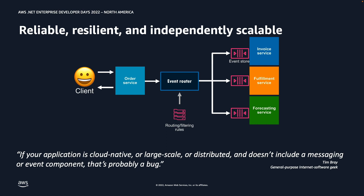This architecture, along with breaking down tight coupling, provides additional benefits. For example, if we decide to evolve our business process and add a new service to send real-time notifications when an order is created, or to prevent credit card fraud by integrating with a payment service, we can easily evolve that business process without making changes to the order service. I would also like to quote: if your application is cloud-native, large-scale, or distributed, and it does not include a messaging or event component, that is probably a bug.